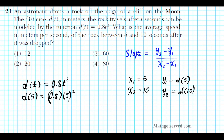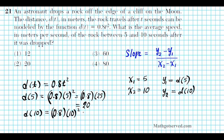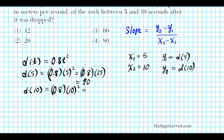So you have 0.8 times 25, which gives you 20. Then for y2, which is d of 10, you input x2 into the function: 0.8 times 10 raised to the second power. Using order of operations again, square first — 10 squared is 100 — then 0.8 times 100 gives us 80 as the distance after 10 seconds.